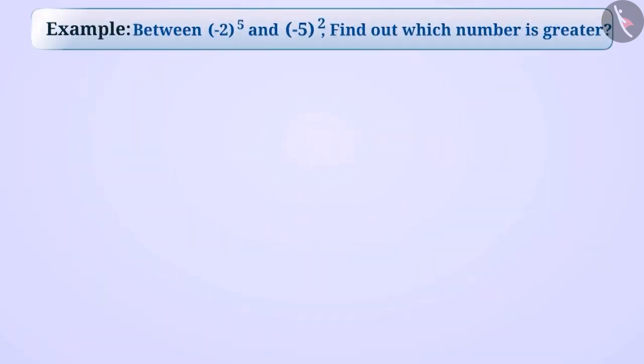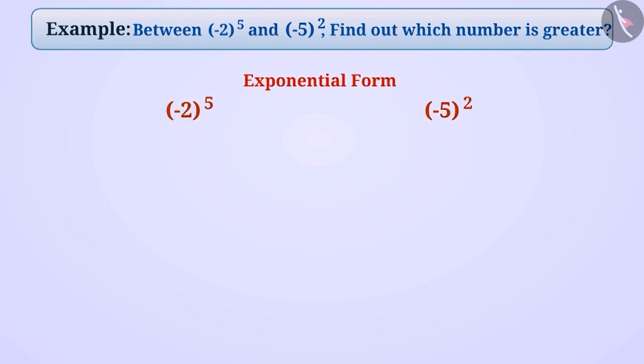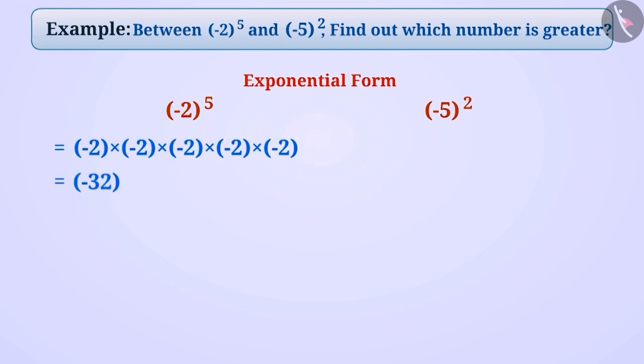Next example: between minus 2 raised to the power of 5 and minus 5 raised to the power of 2, find out which number is greater. Here the numbers are represented in Exponential Form. Let us first find the numbers corresponding to these Exponential Forms. We can write minus 2 raised to the power of 5, and we will get the result as minus 32.